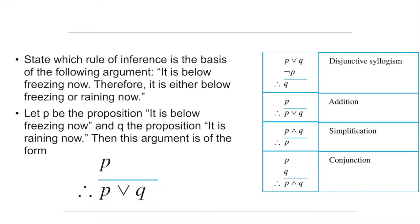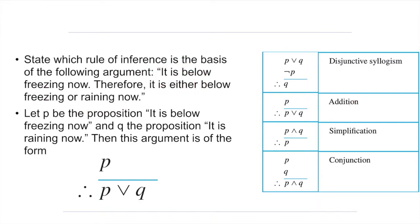What we need to do here is state which rule of inference is the basis of the following argument. We know the argument is valid; we just have to mention what rule is used to create this type of argument. As you can see, the name of the rule is addition. So the answer is: the rule of inference that is the basis for this specific statement is addition.